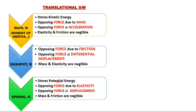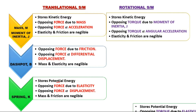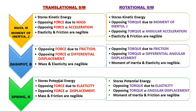In the case of mass, force is directly proportional to acceleration. In the case of dashpot, force is directly proportional to differential displacement (velocity). In the case of spring, force is directly proportional to displacement. In the rotational system, force is replaced by torque, mass is replaced by moment of inertia, acceleration is replaced by angular acceleration, and displacement is replaced by angular displacement.